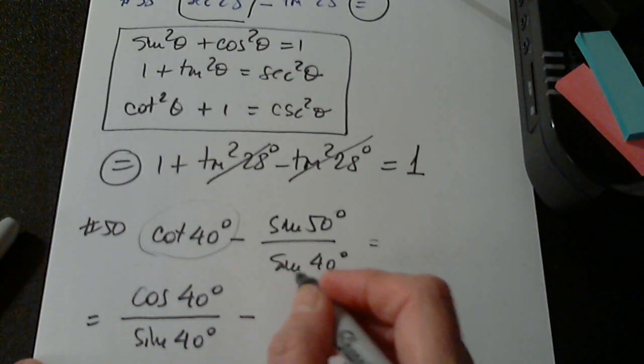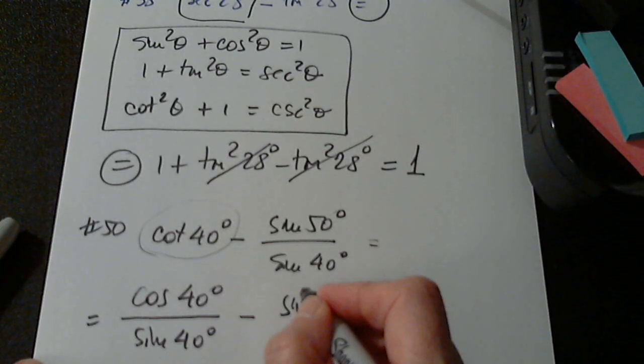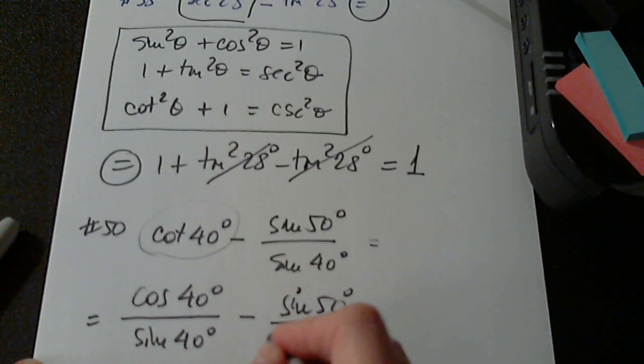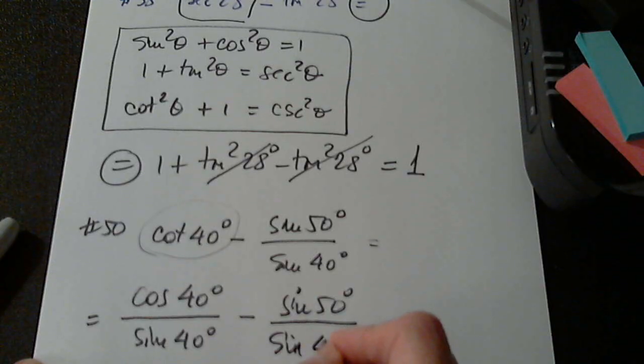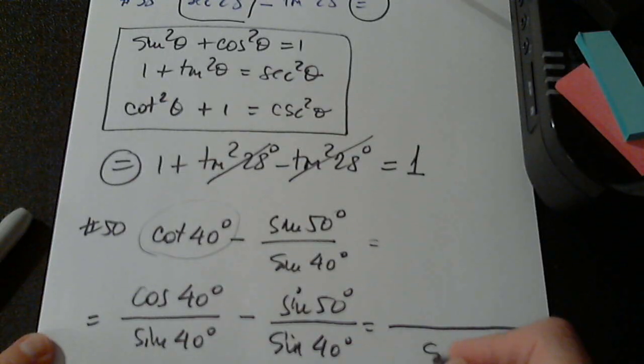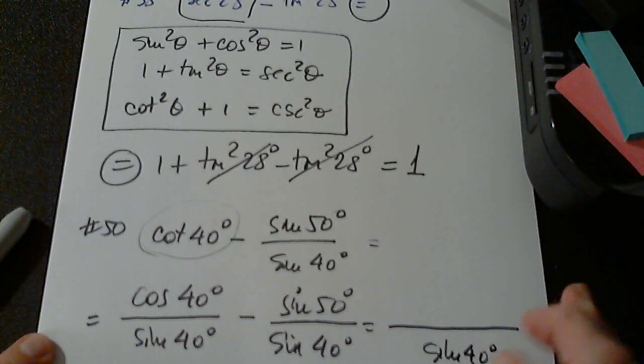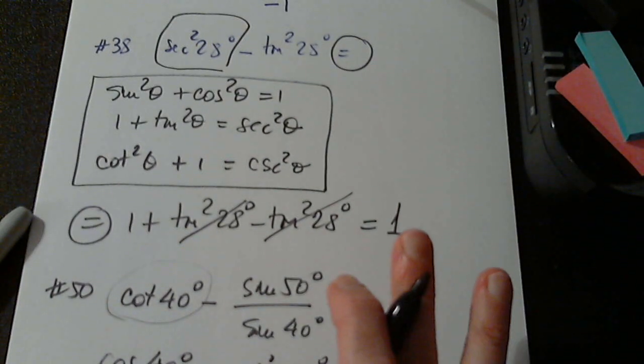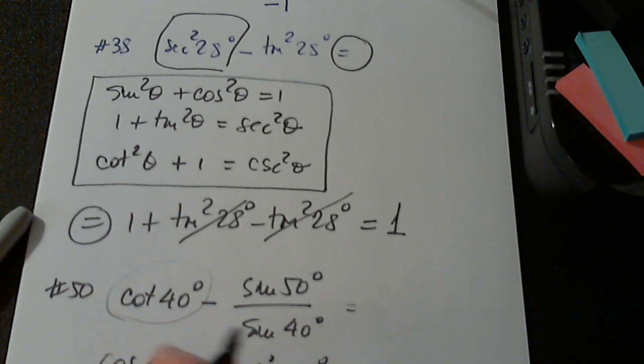Minus sine 50 degrees over sine 40 degrees. I see the same denominator. Okay, nice. And now, I see cosine 40, I see sine 50. I know that this sum is 90 degrees. So I want to use a co-function identity.